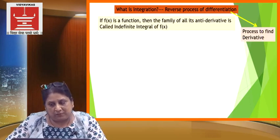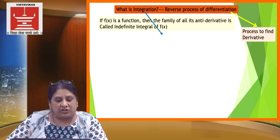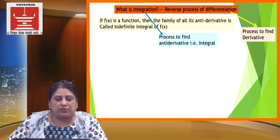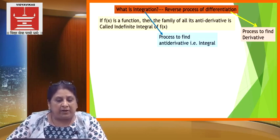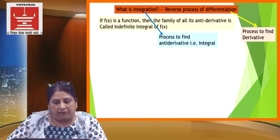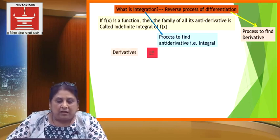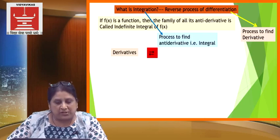Basically, differentiation means it is a process to find the derivative. Integration means it is the process to find the antiderivative or integral or primitive. That means if f of x is a function, then the family of all its antiderivatives is called the indefinite integral of f of x. So basically, differentiation and integration are interrelated — they are the reverse process of each other.